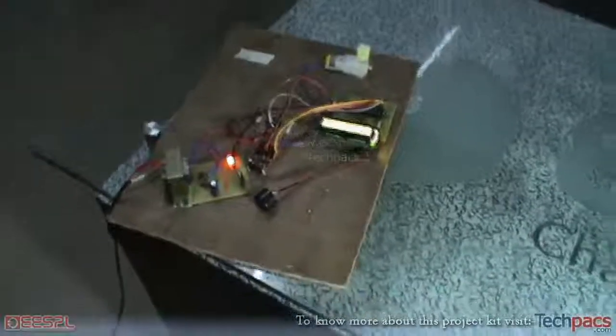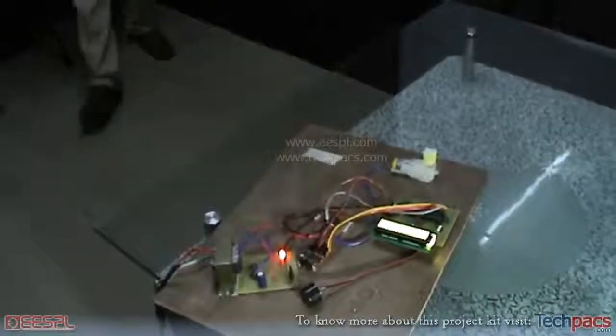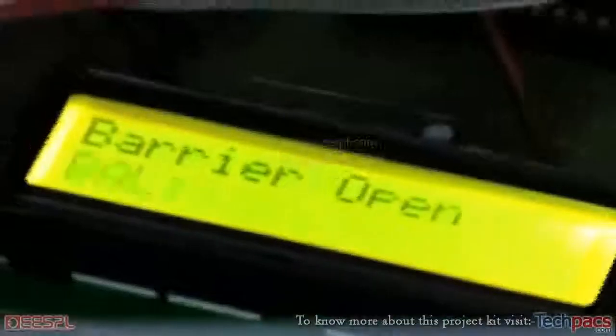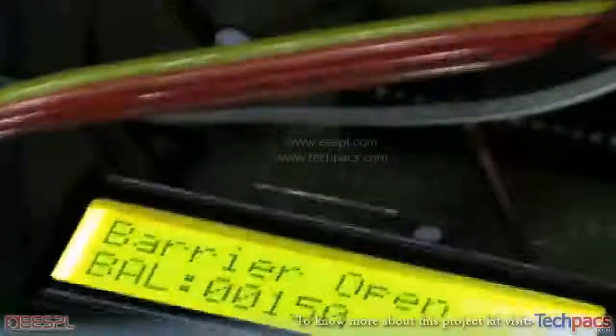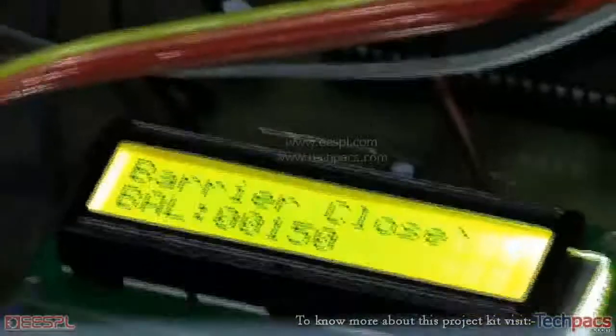So let us try and see. He's coming near. You can see on the LCD it says deducted, barrier opens. The balance now has been shifted to 150, barrier closes. The initial balance was 200.